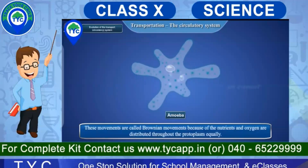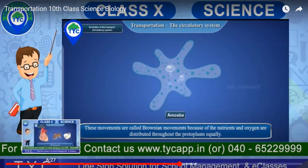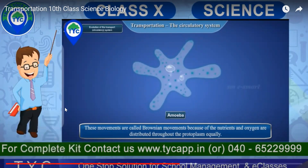Amoeba shows a kind of movement you can see right now. This movement is called Brownian movement. Because of the nutrients and oxygen distributed through the protoplasm — this fluid-like substance inside it — the amoeba moves in this characteristic way.